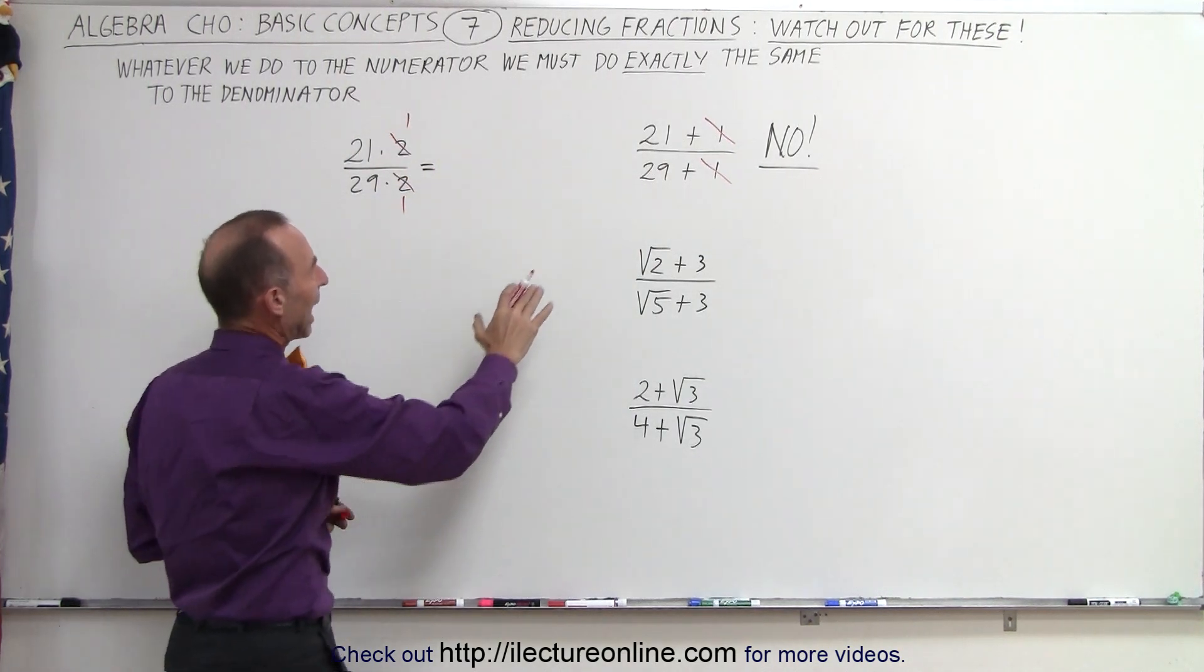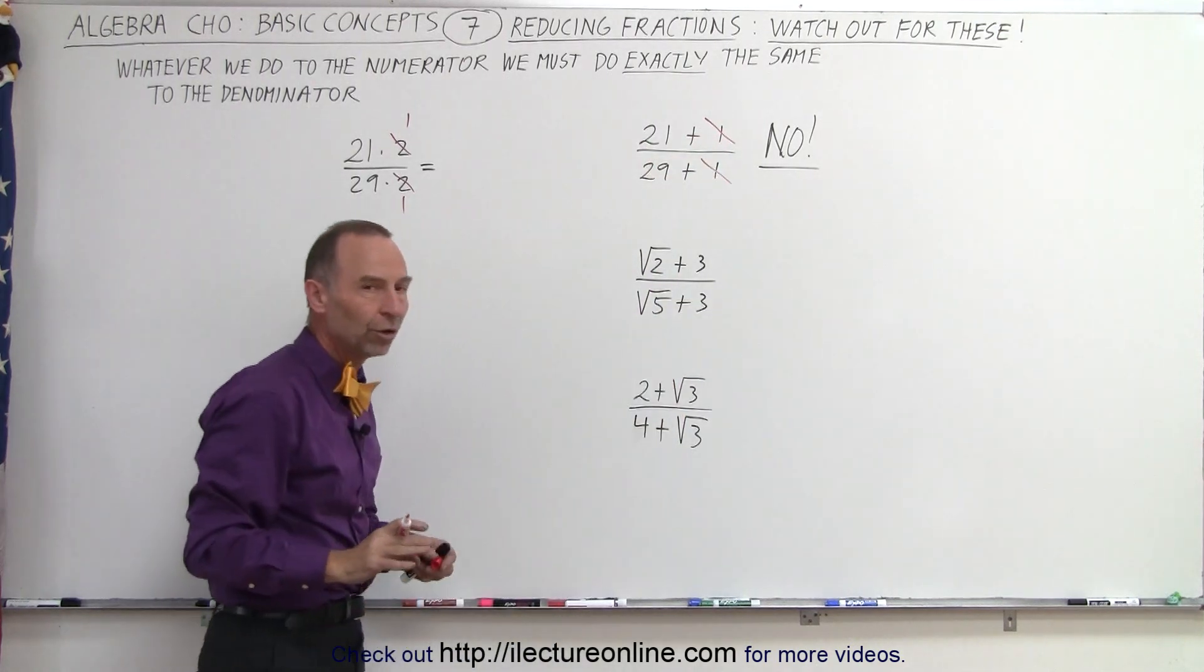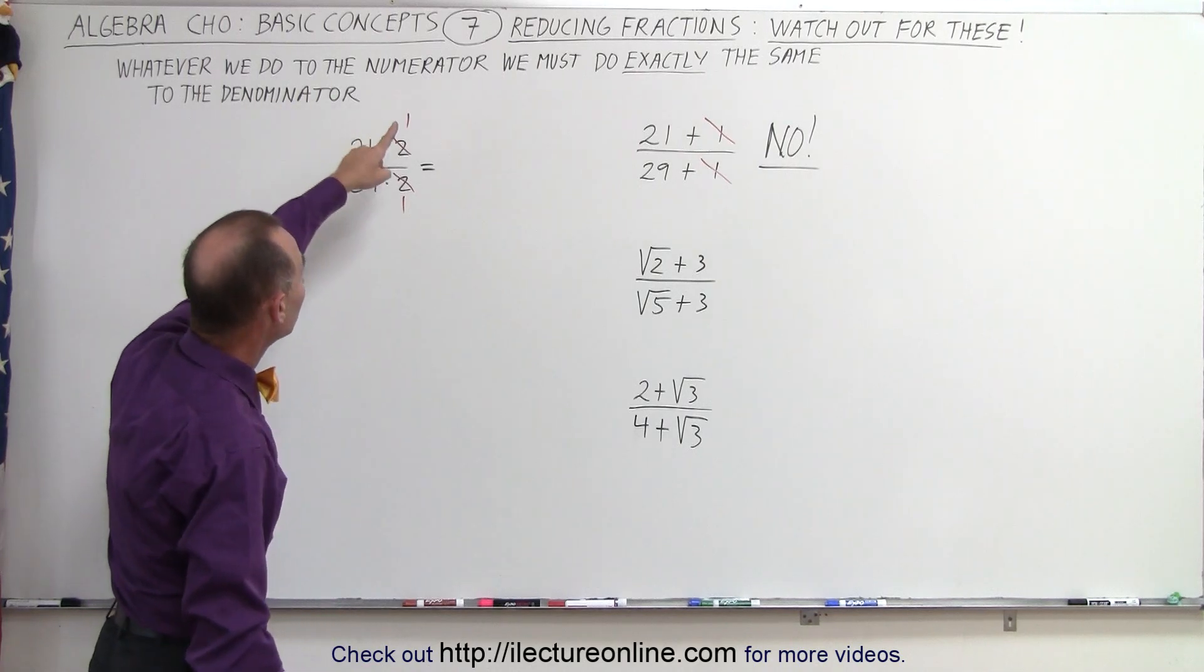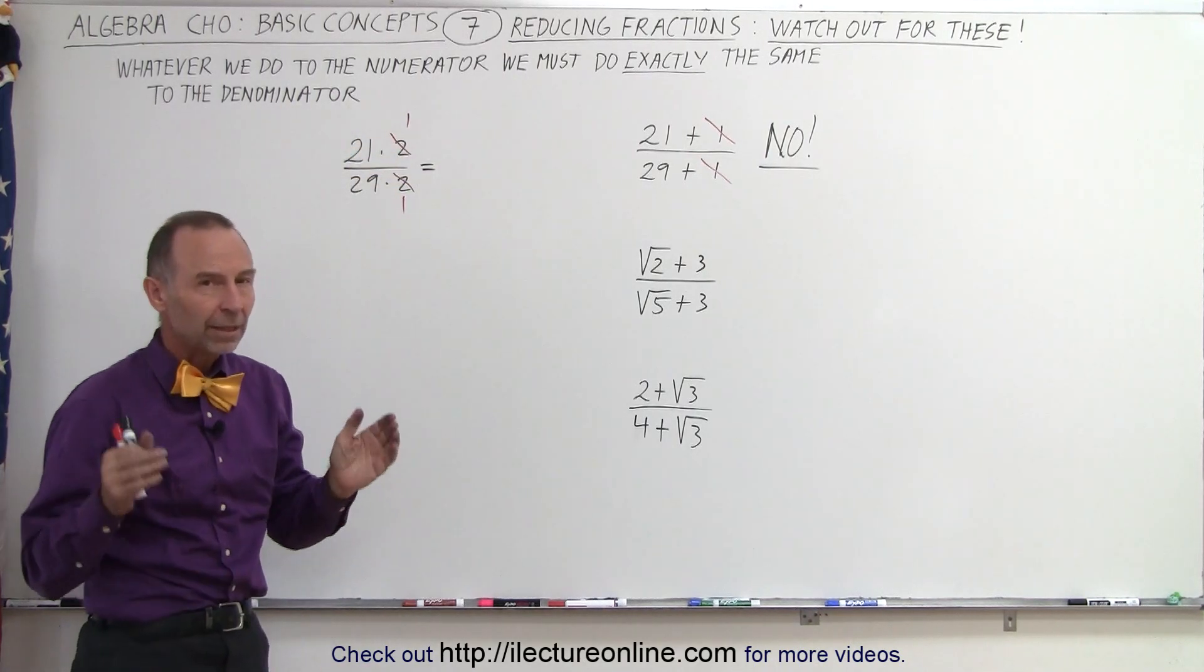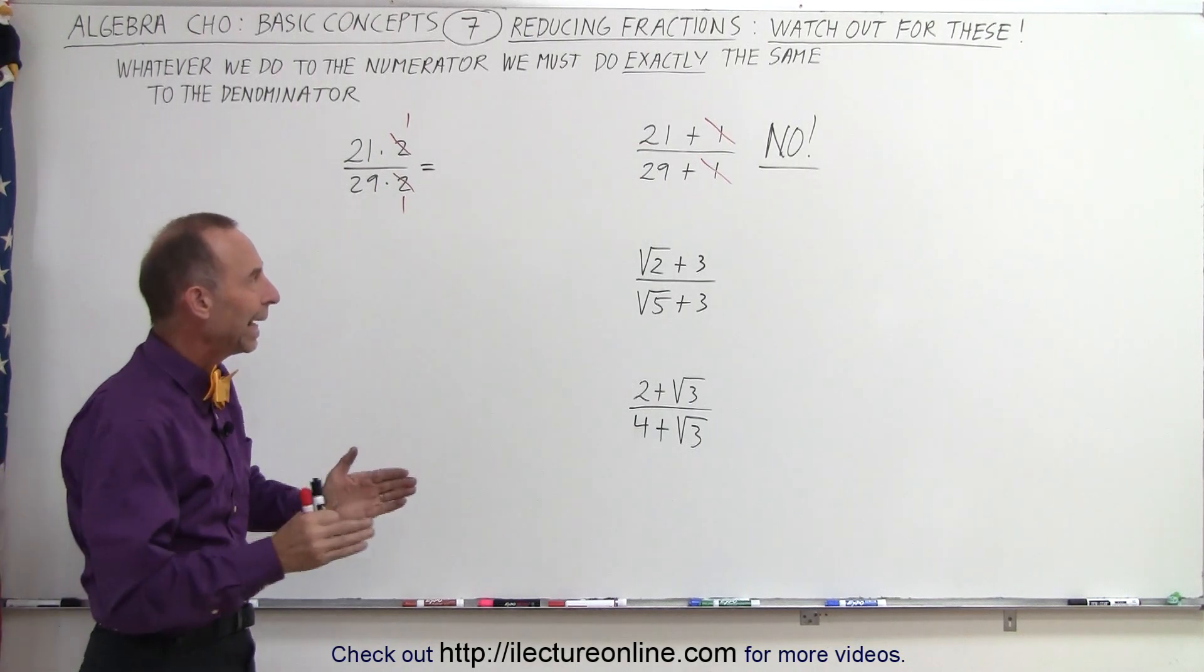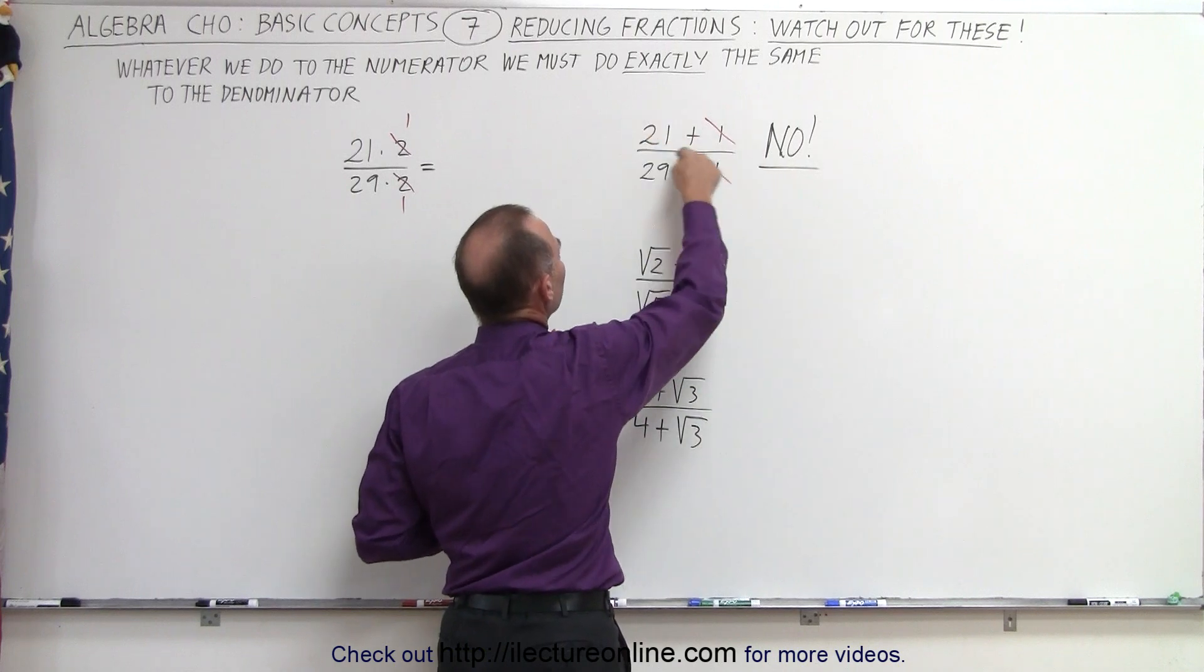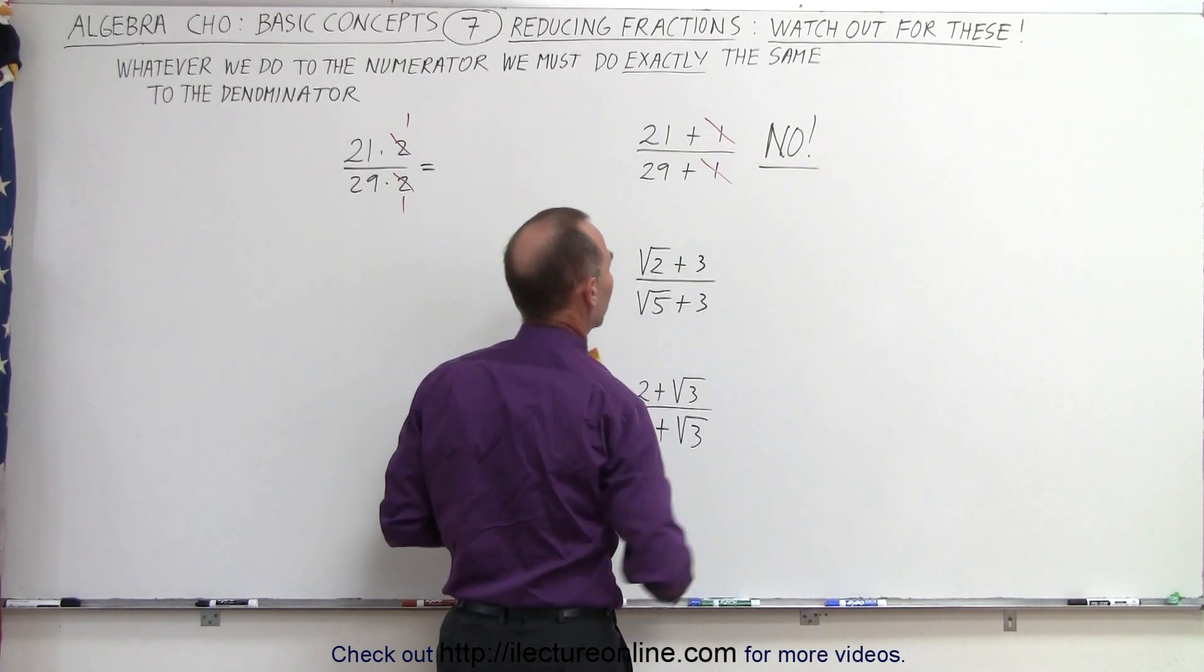But when we are adding the numbers together like this, when we have two separate terms, you cannot do that. Again, the reason is whatever we do to the numerator, we must do exactly the same to the denominator. And we mean the whole numerator and the whole denominator. So that means we have to divide the whole numerator by something and the whole denominator by something. So this is not permitted.